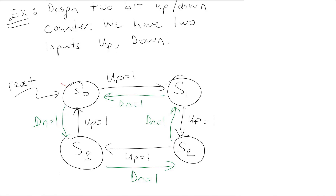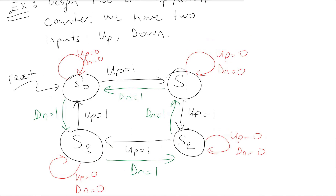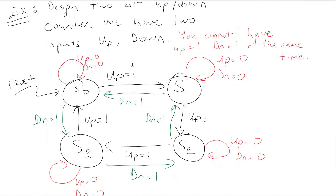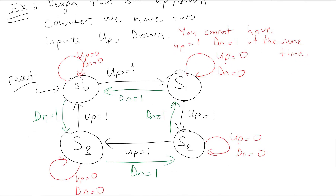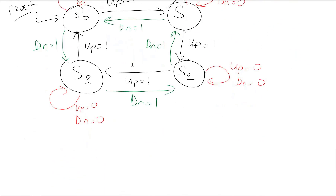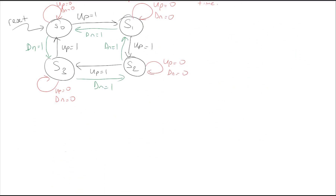We will be staying in our states if up is 0 and down is 0. The last case — up is 1 and down is 1 at the same time — is not possible.